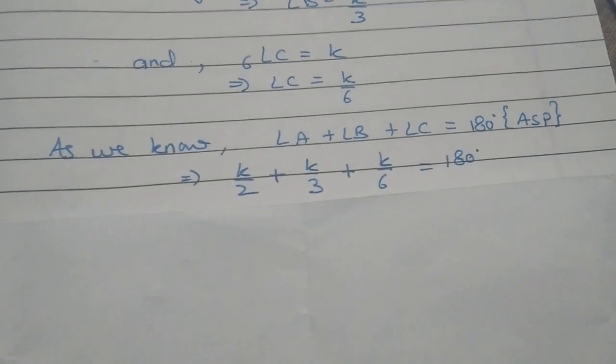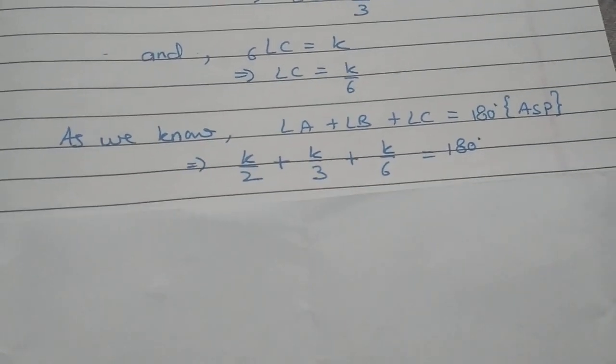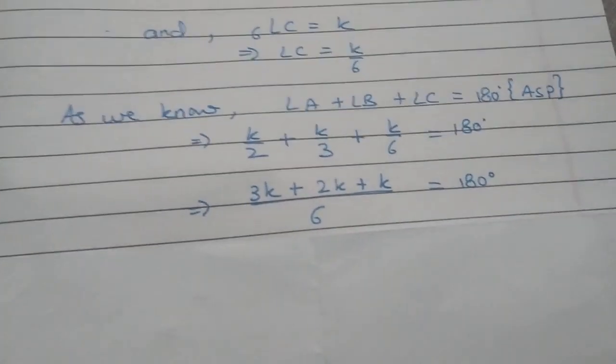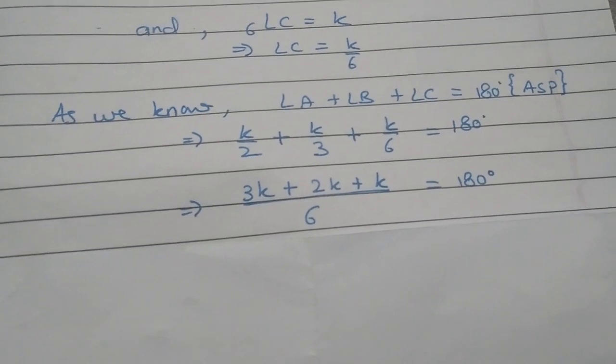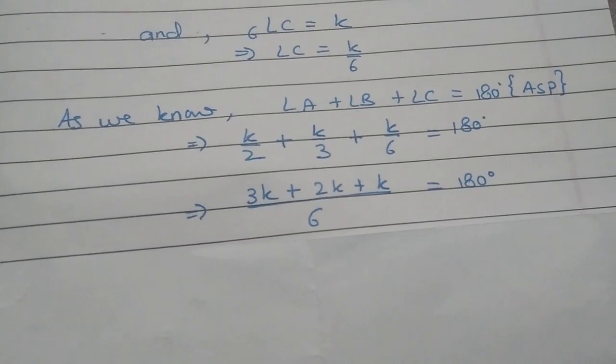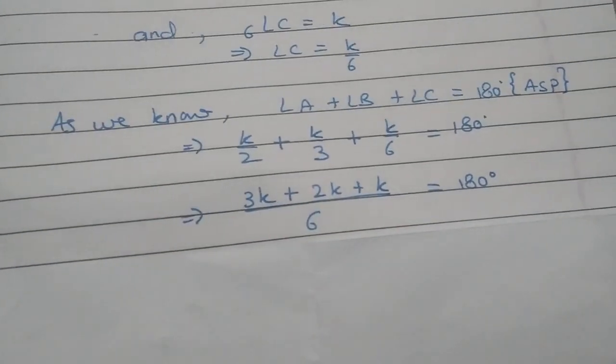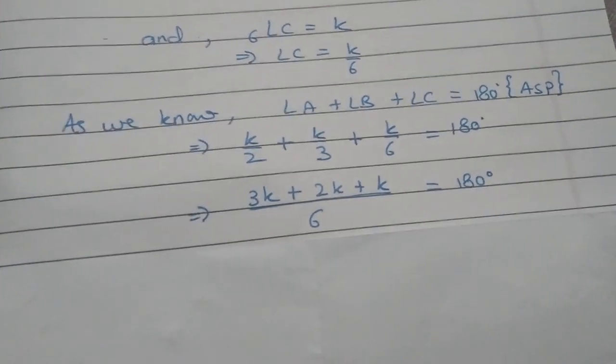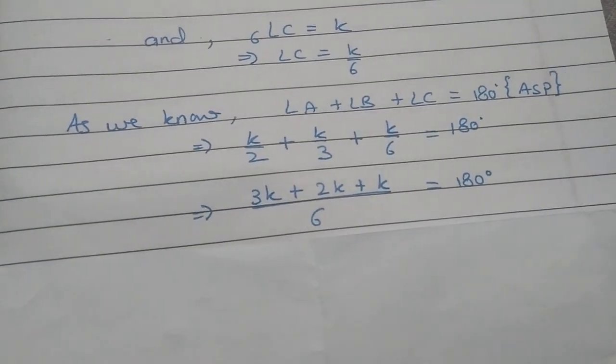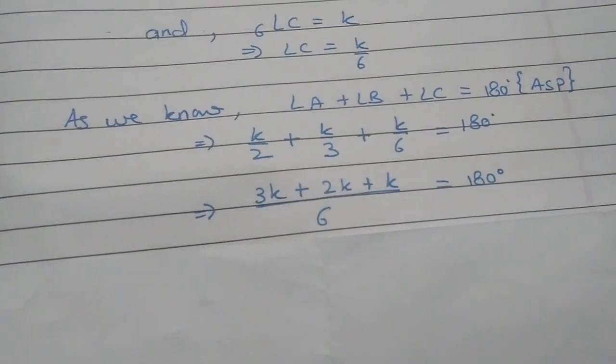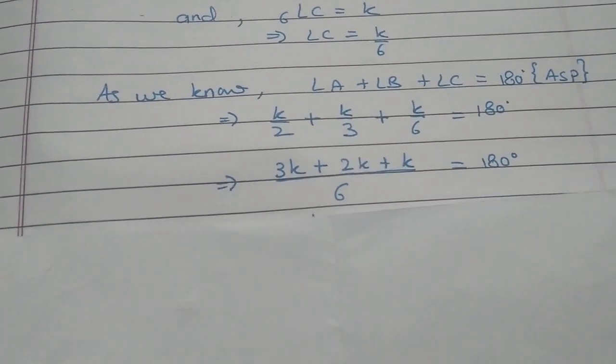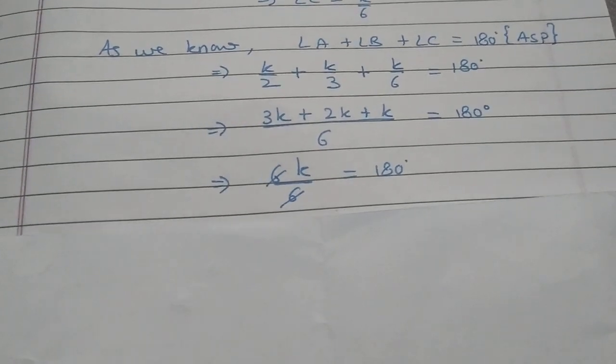K upon 2 plus K upon 3 plus K upon 6 is equal to 180 degrees. So the LCM of 2, 3 and 6 is 6. Converting to common denominator: 3K upon 6 plus 2K upon 6 plus K upon 6 equals 180 degrees.